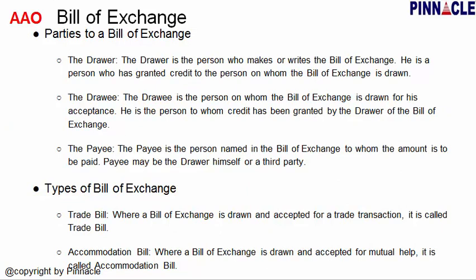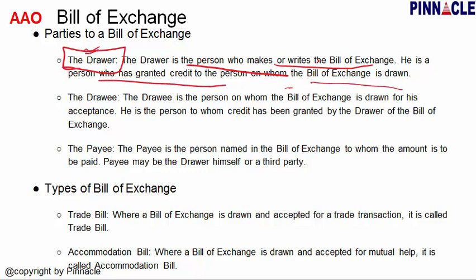When they make a bill of exchange, there are basically three parties involved. Drawer is the person who makes or writes the bill of exchange. He is the person who has granted credit to the person on whom the bill of exchange is drawn. So this is generally the person who has given credit and made the bill of exchange.